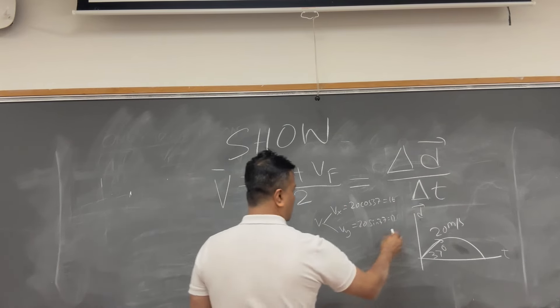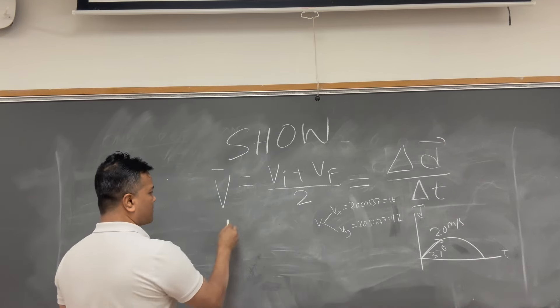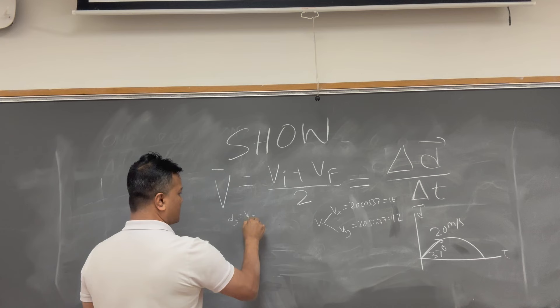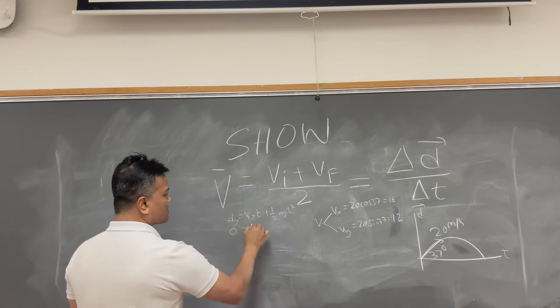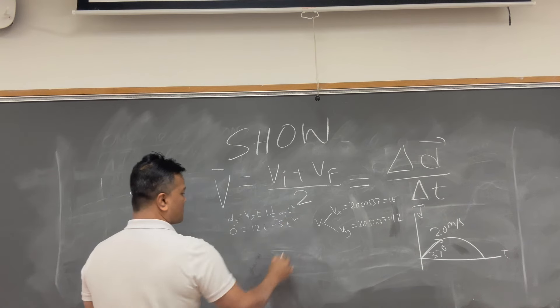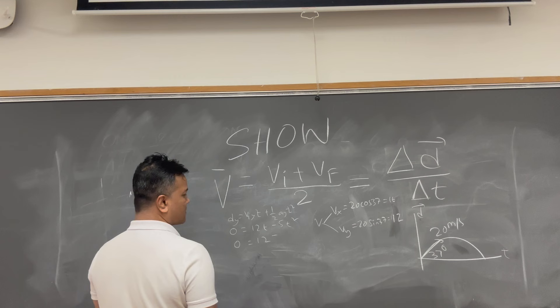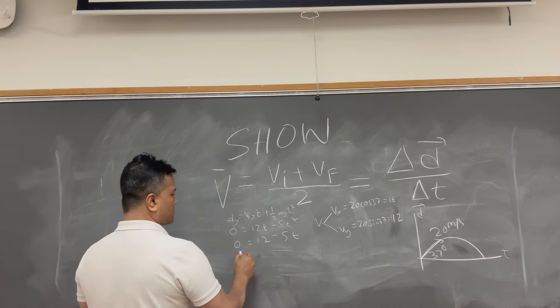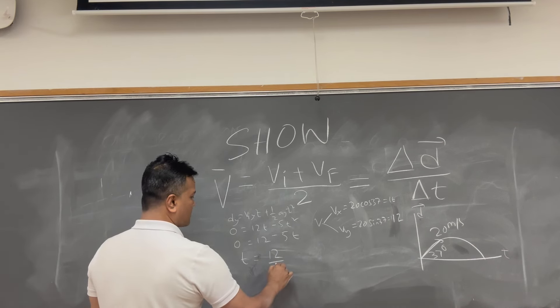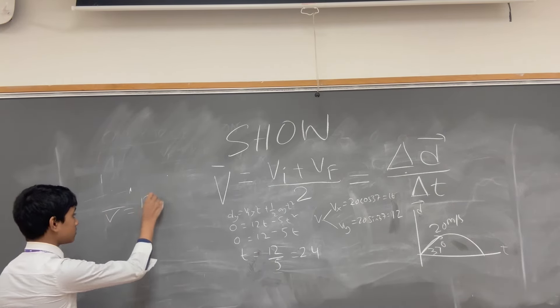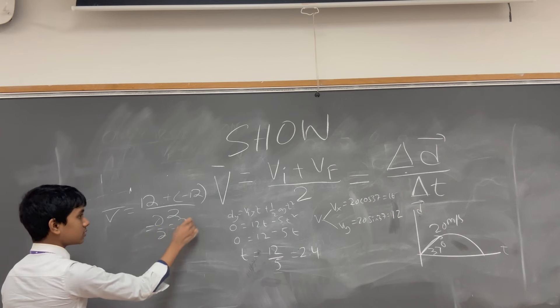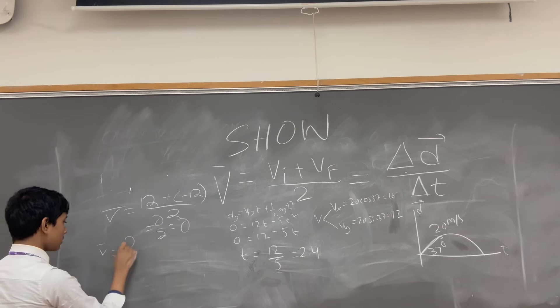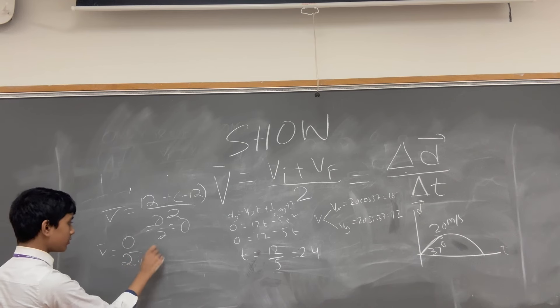Now I want to find the time. To find the time you have to use Dy equals Viy times t plus half Ay t squared. This is Dy. It is going to be 0 to 0. So, this is 12t minus 5t squared. So, then 0 equals 12 minus 5t. So, t equals 12 over 5. So, the total displacement is 0. It doesn't even matter what the time is even though it's 2.4.